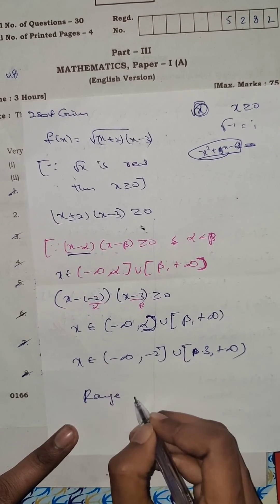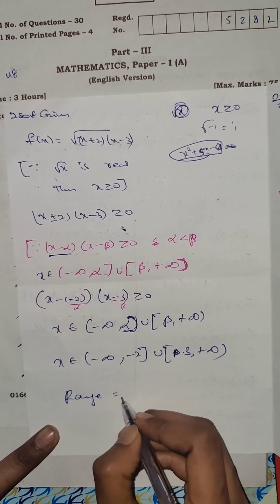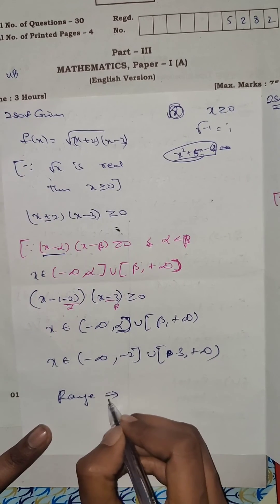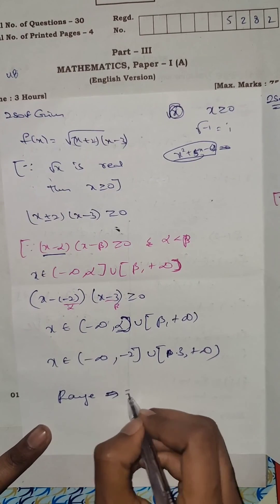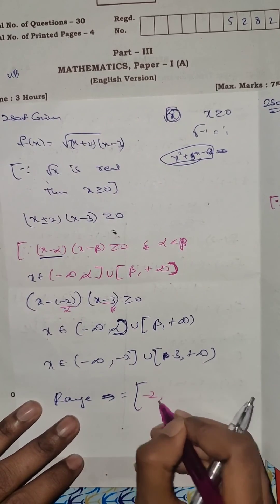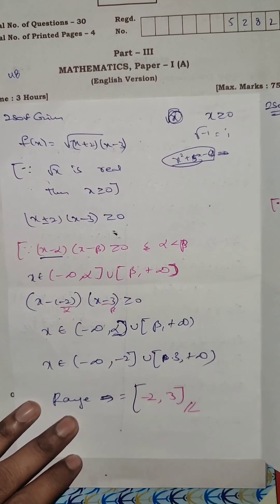Range is equal to. Range is equal to. Range implies, equals to, equals to minus 2, comma 3. This is the answer.